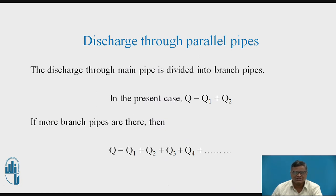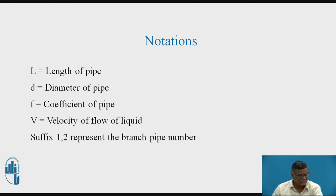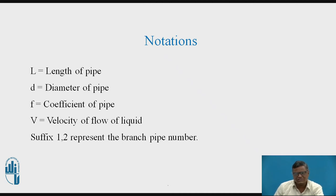Discharge through parallel pipes: if you have any number of branches, the total Q equals Q1 plus Q2 plus Q3 plus Q4, and so on for whatever number of branched pipes are there. The notations used are: L = length of pipe, D = diameter of pipe, F = coefficient of friction of pipe, V = velocity of flow. Suffix 1 and 2 represent branch pipe number one and two respectively.